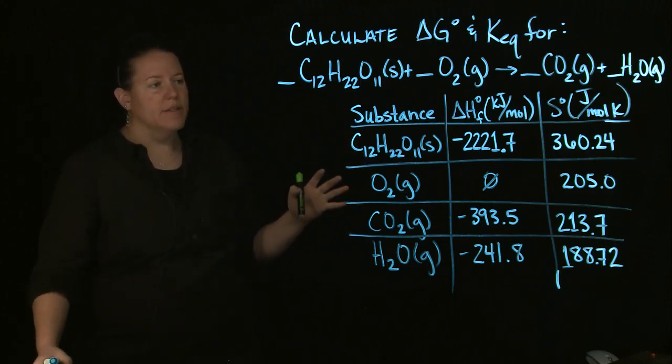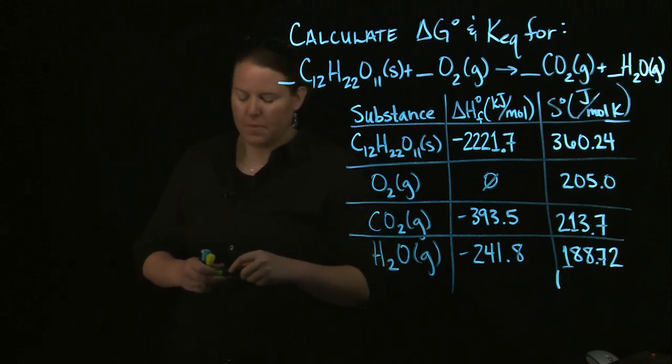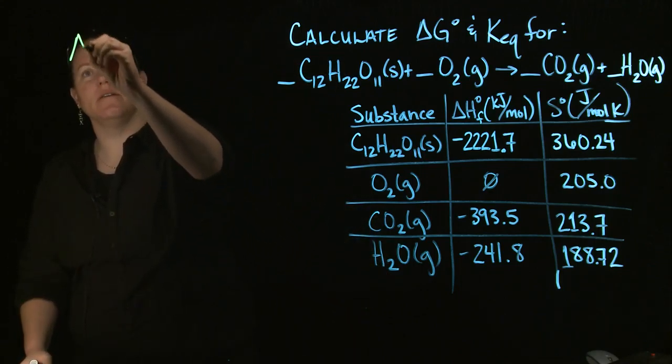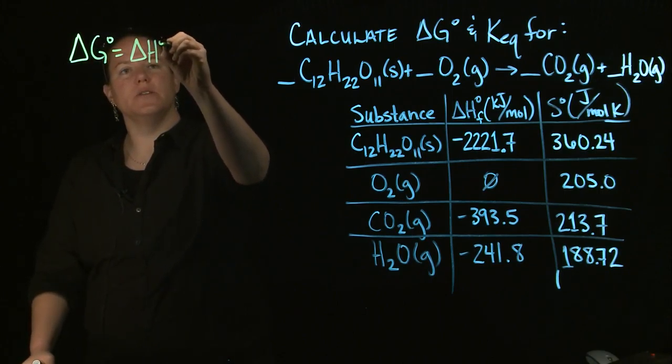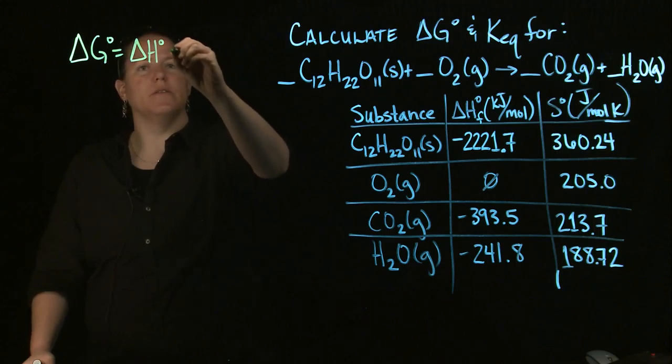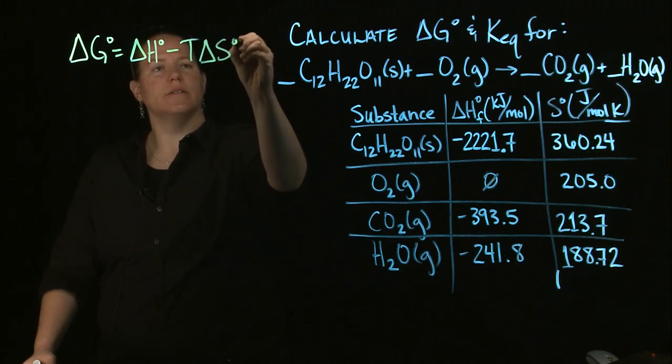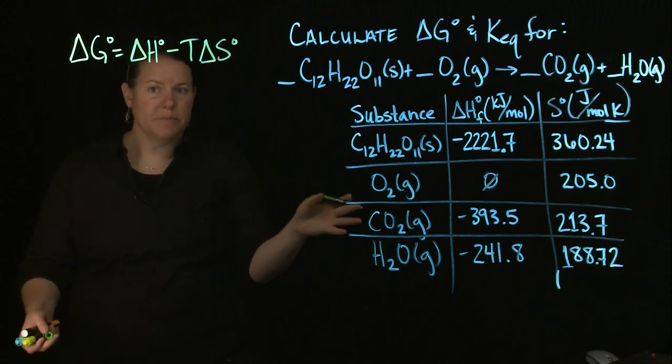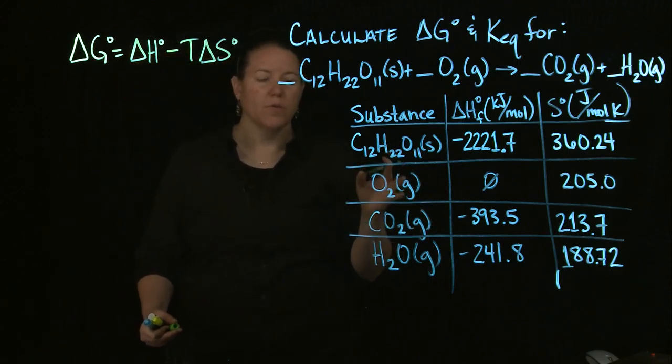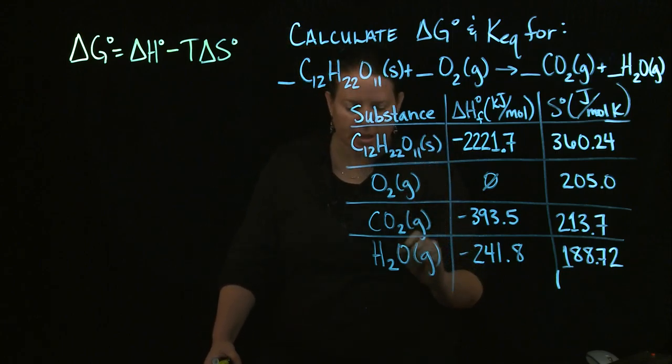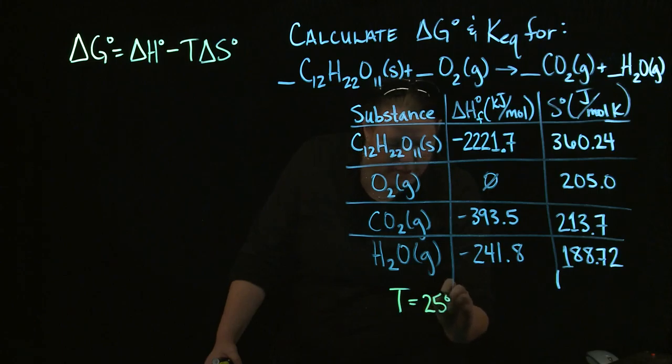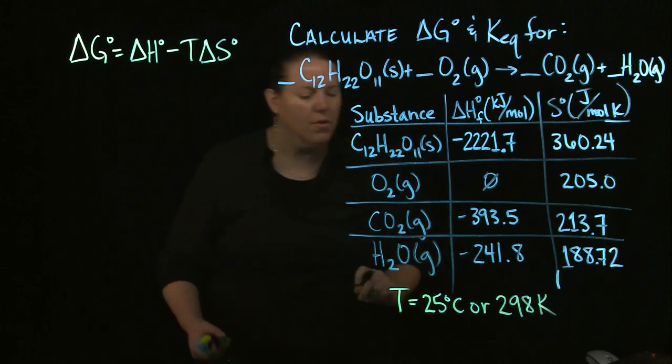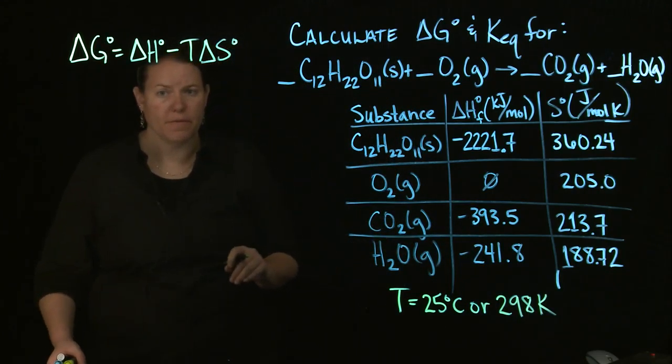The way we calculate this we need to know a couple of pieces. If we want to calculate delta G naught which is at standard conditions, then we need a delta H naught and we need to have an S naught and we need a temperature as well. The temperature was not listed here so we have to assume that it's the standard condition temperature.